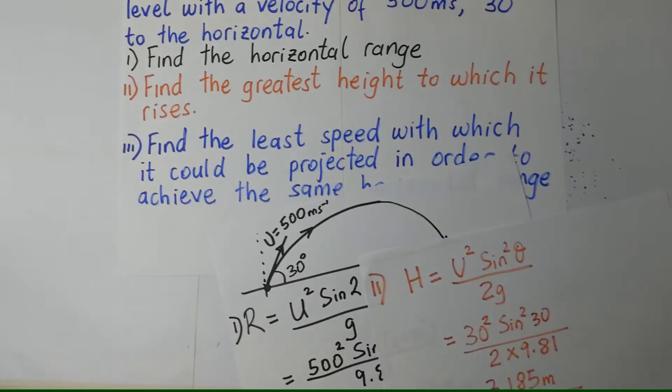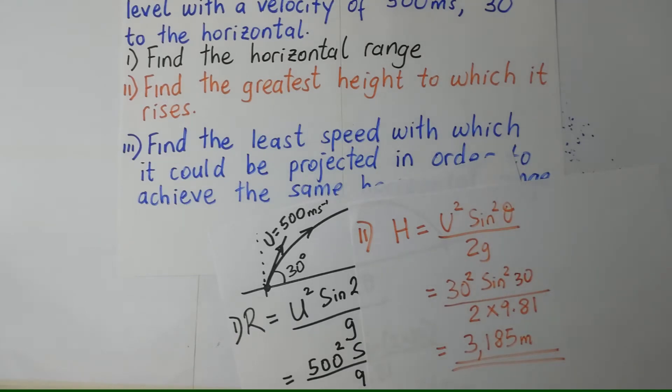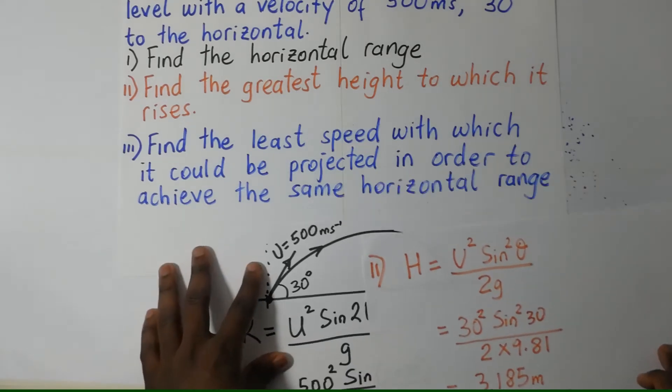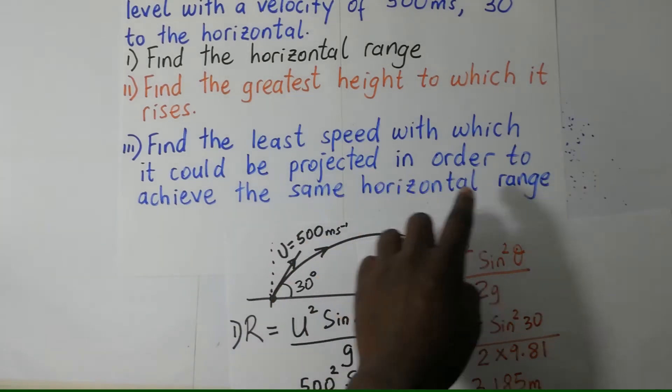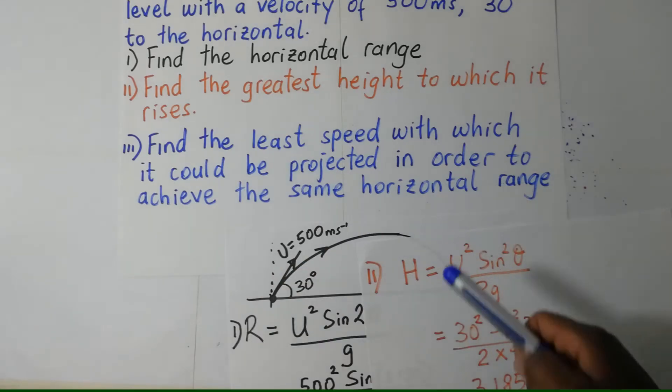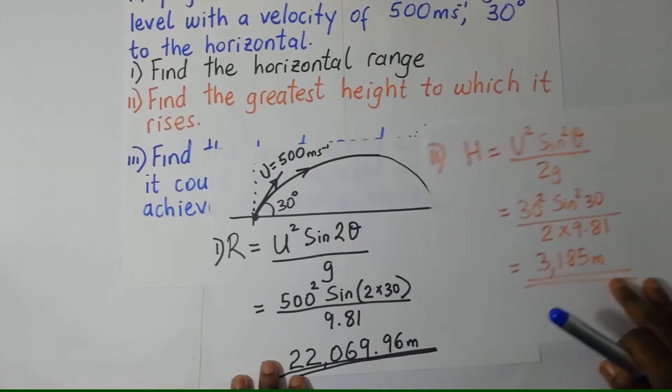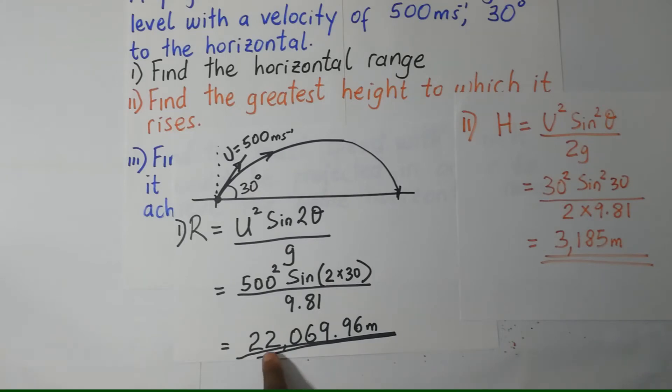So the question is asking for the least speed it should take for it to be able to reach the same horizontal range. Now they're talking about horizontal range, and the horizontal range you have achieved here is this right there.